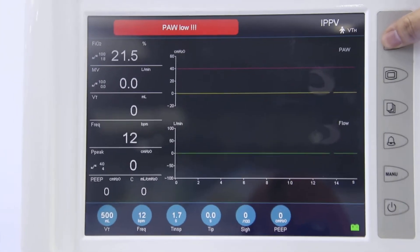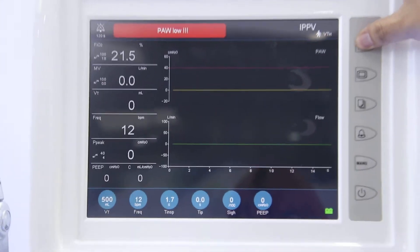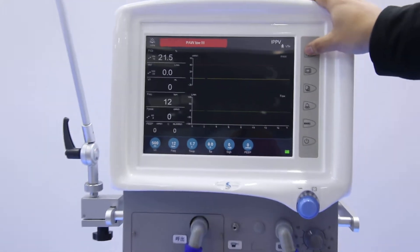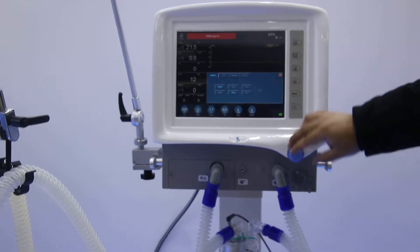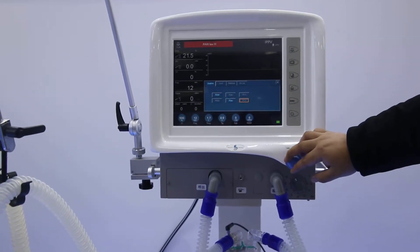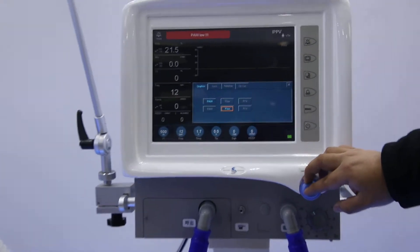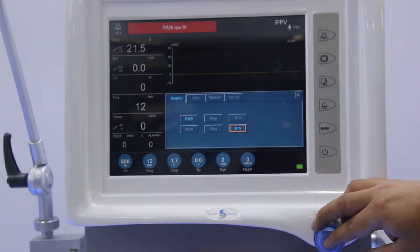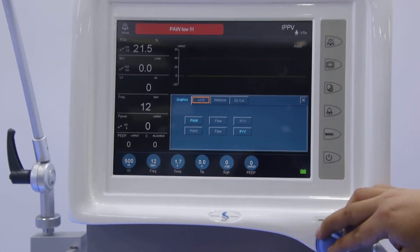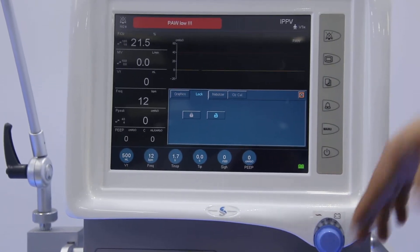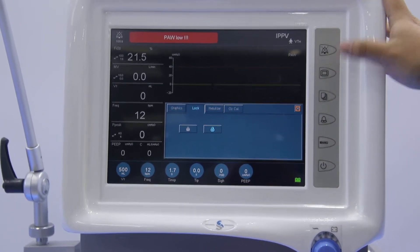The first button here is the mute button. Once we press this button, the machine will be in silence for two minutes and then it will recover again. And the second button is for the graphics. As I mentioned, you can choose each one of them to change it to the PV loop. And the third one is for the lock. Once we lock the machine, then the buttons cannot be used.